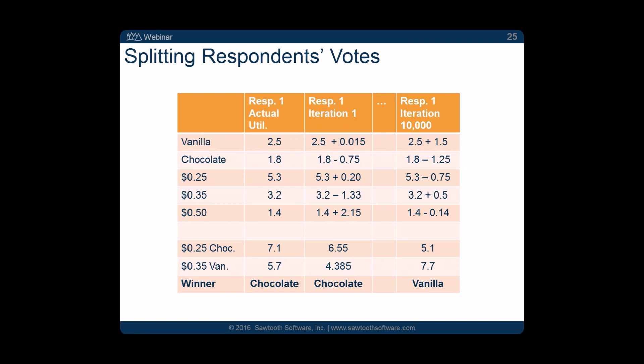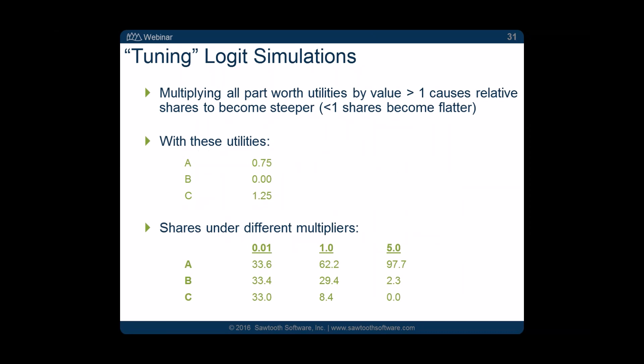Question: if an analyst tuned the exponent to make simulated shares of existing market products match actual market shares, would you then call all the shares 'market shares'? I would still call them shares of preference. I might say I've calibrated my shares of preference to be like the market shares, but I still wouldn't say they are the same thing. A photograph of a person can look a lot like that person, but it's not the same as the person.